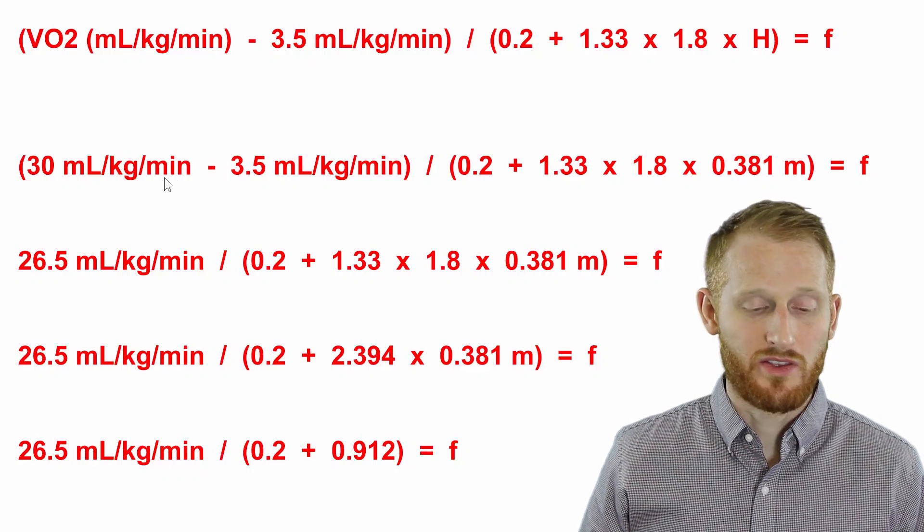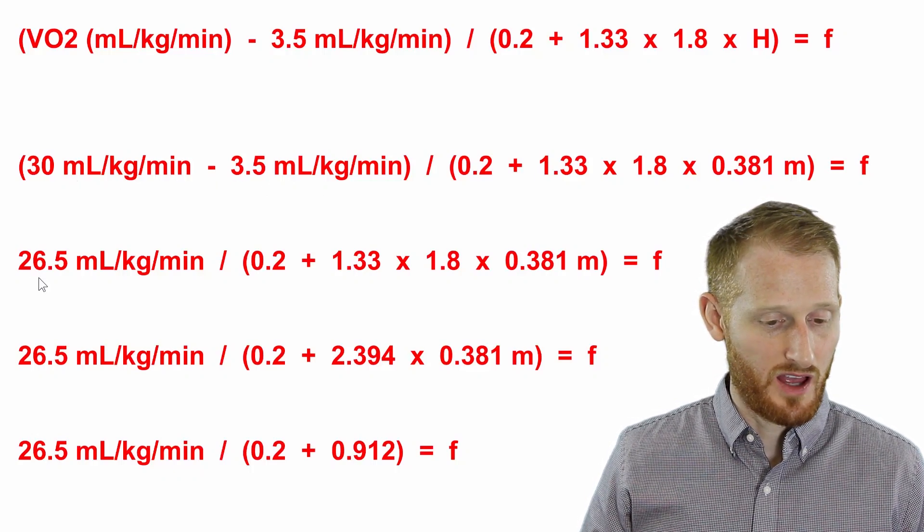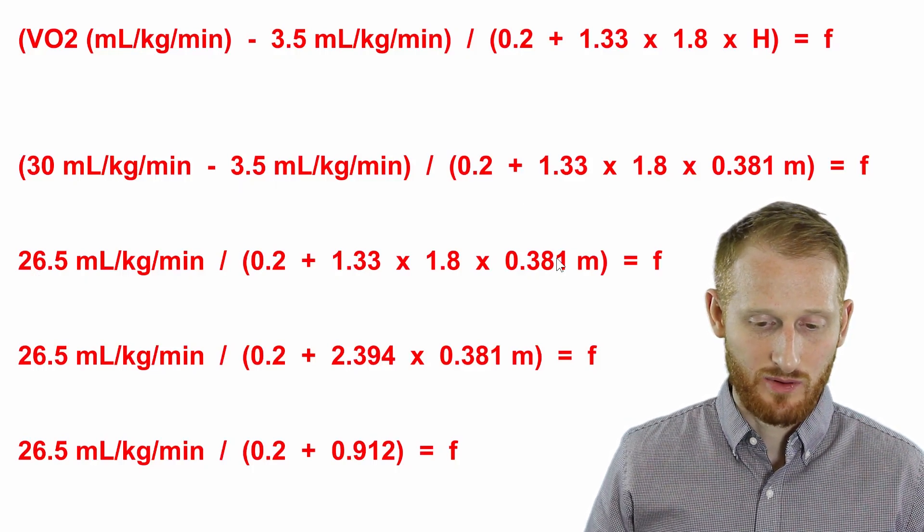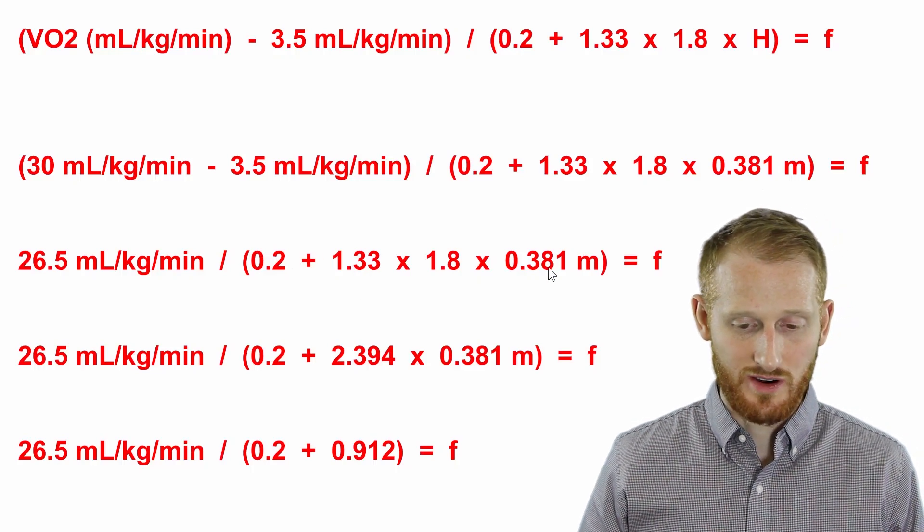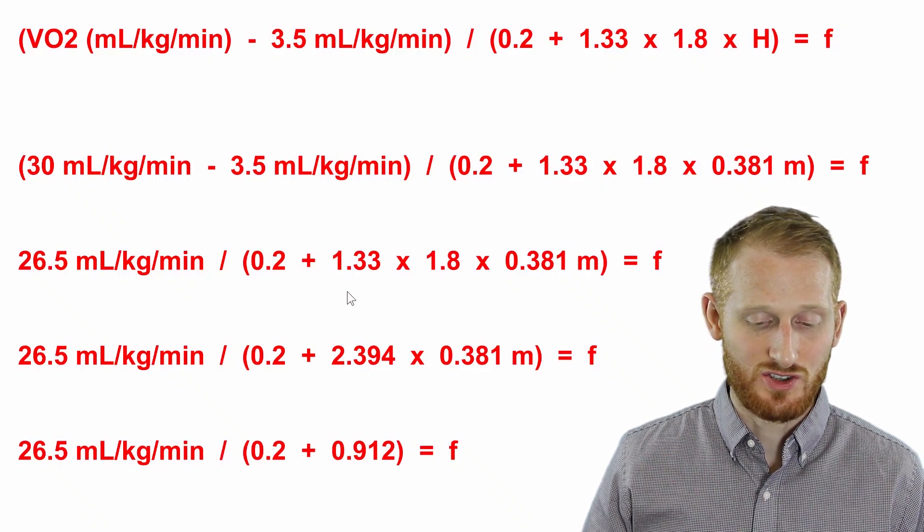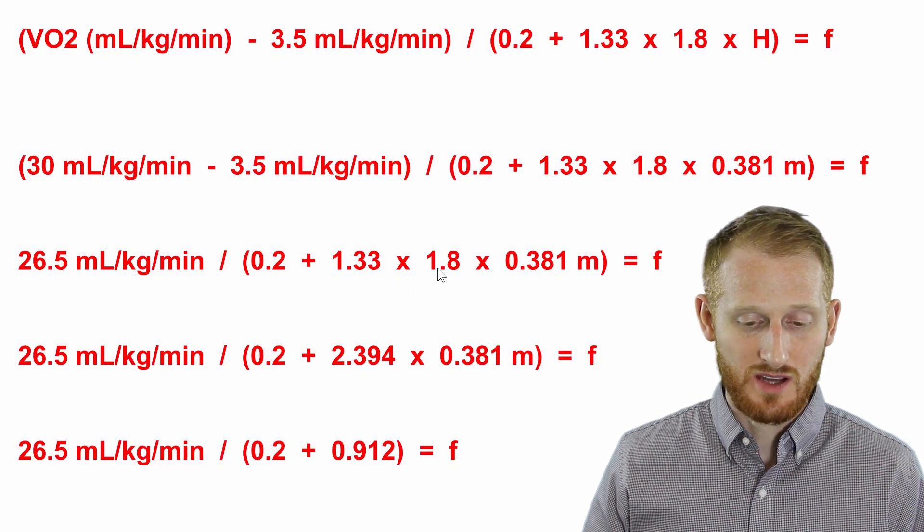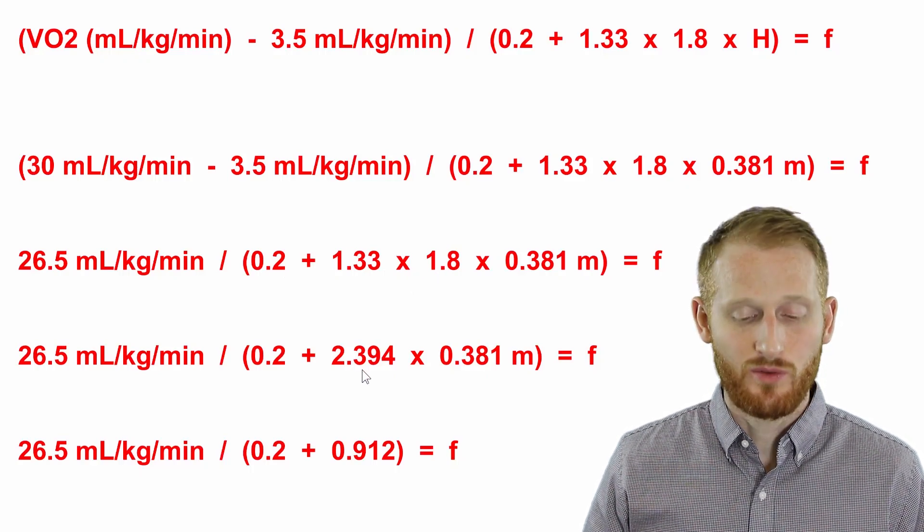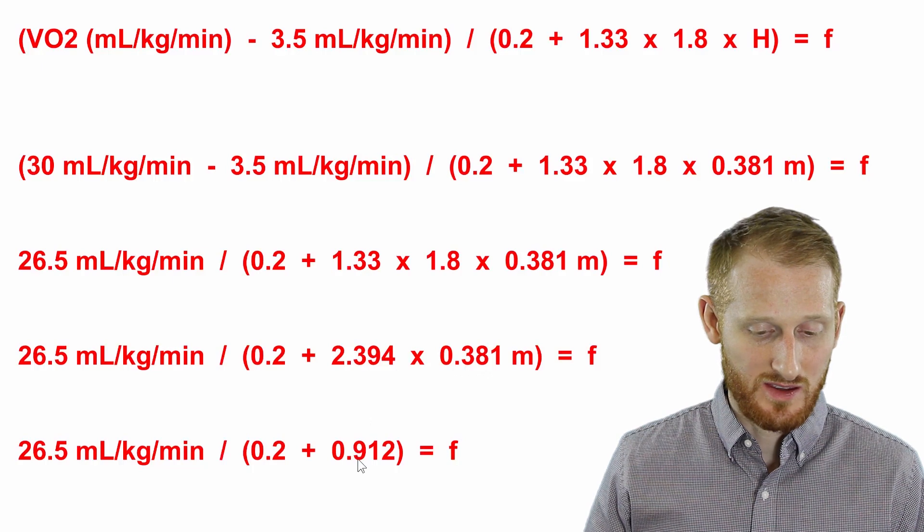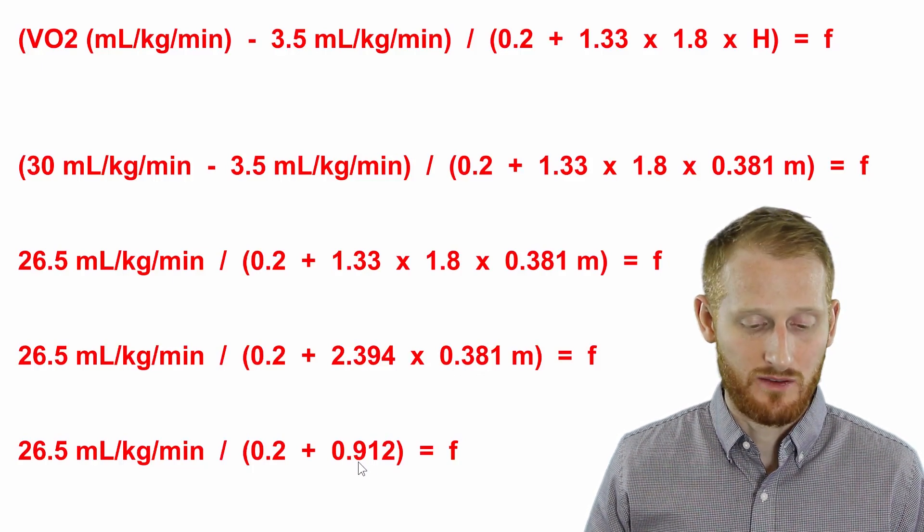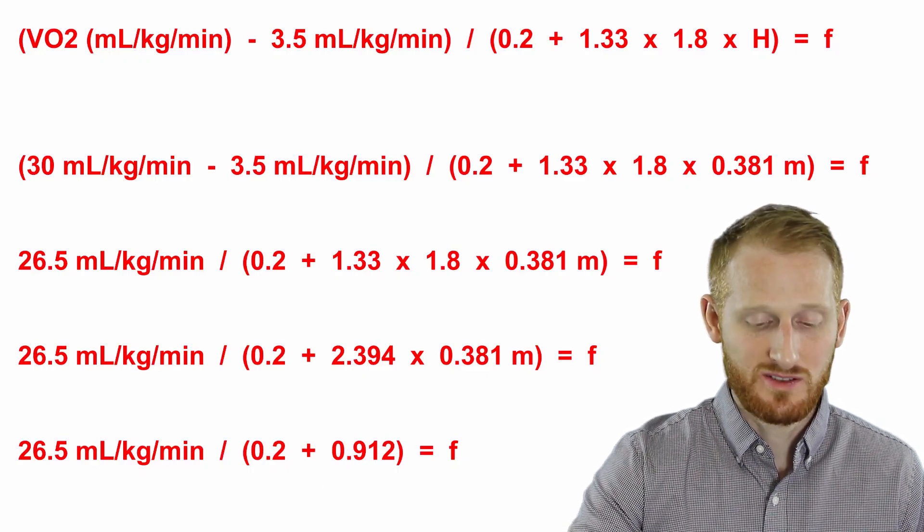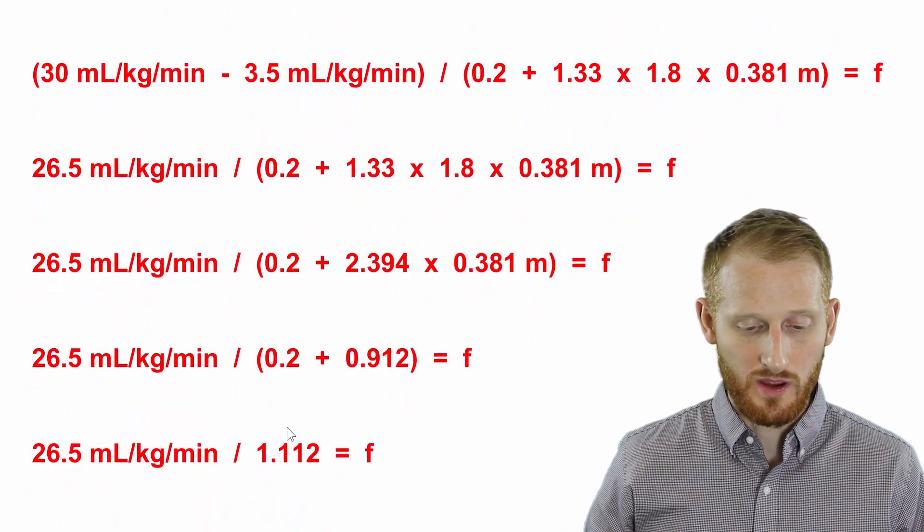Now we can actually start to solve for this in order to figure out the step frequency. Let's do the first set of parentheses first. So 30 minus 3.5 gives us 26.5 mL/kg/min. Then we have this second set of parentheses that we need to deal with. Let's start with all the multiplication. So 1.33 times 1.8 gives us 2.394. Then 2.394 times the 0.381 gives us the 0.912.